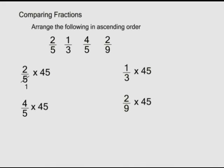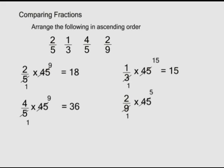Two over five times forty-five is eighteen. One over three times forty-five is fifteen. Four over five times forty-five is thirty-six. Two over nine times forty-five is ten. So the order from smallest to largest is: two over nine, one over three, two over five, and four over five.